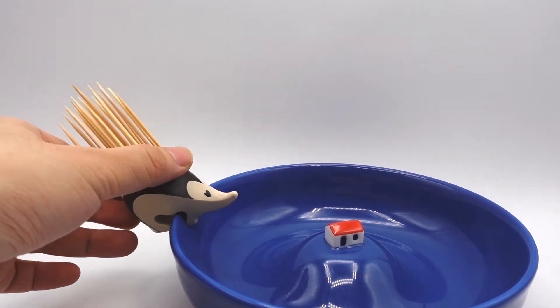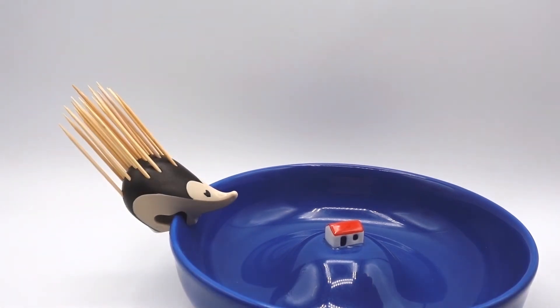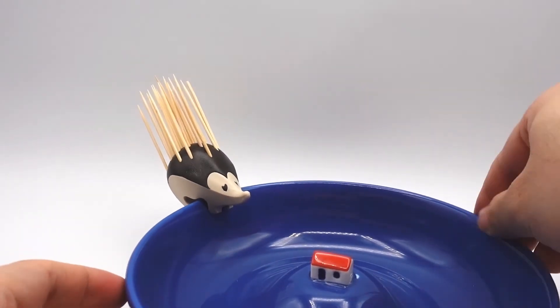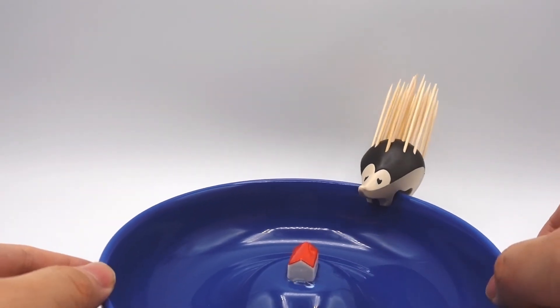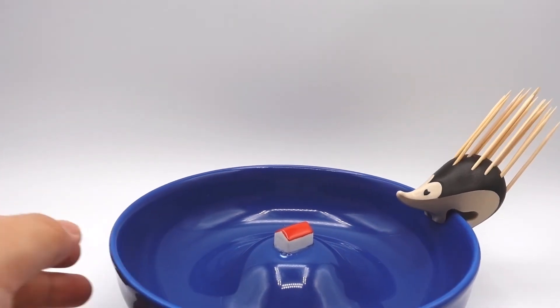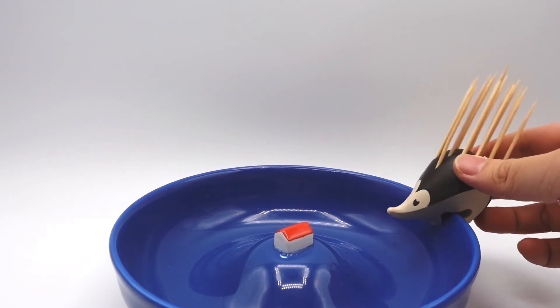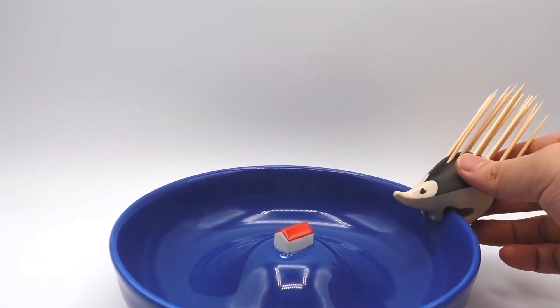After you're done you can clip it to the side of a bowl like that. The opening on the bottom is about five millimeters wide so it might not fit a bowl with an extra thick rim.